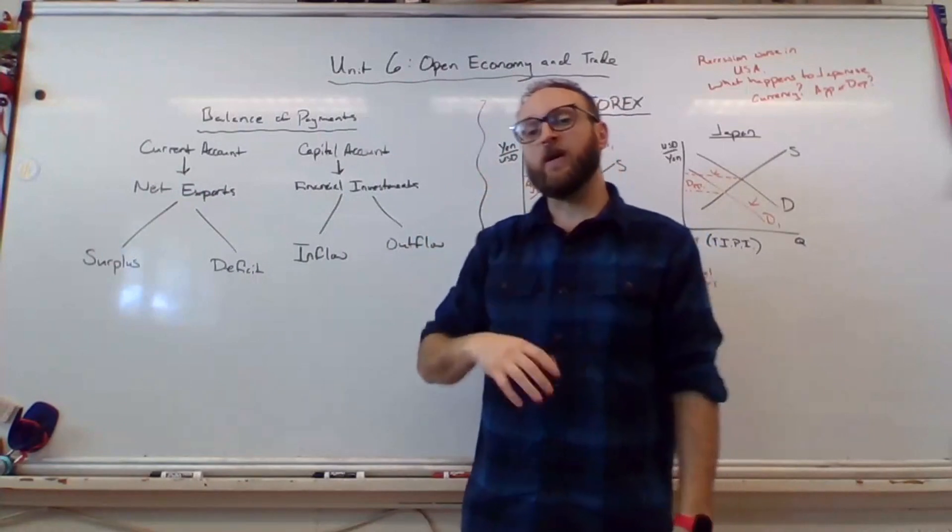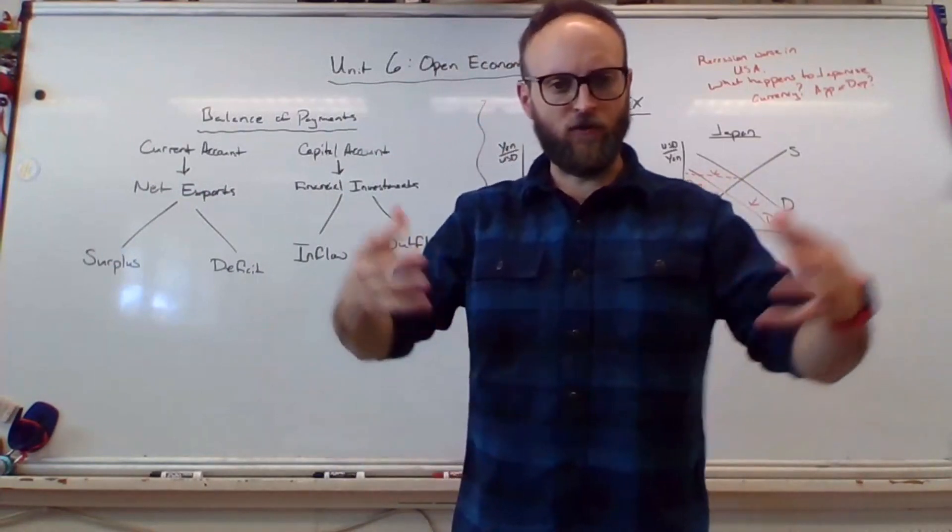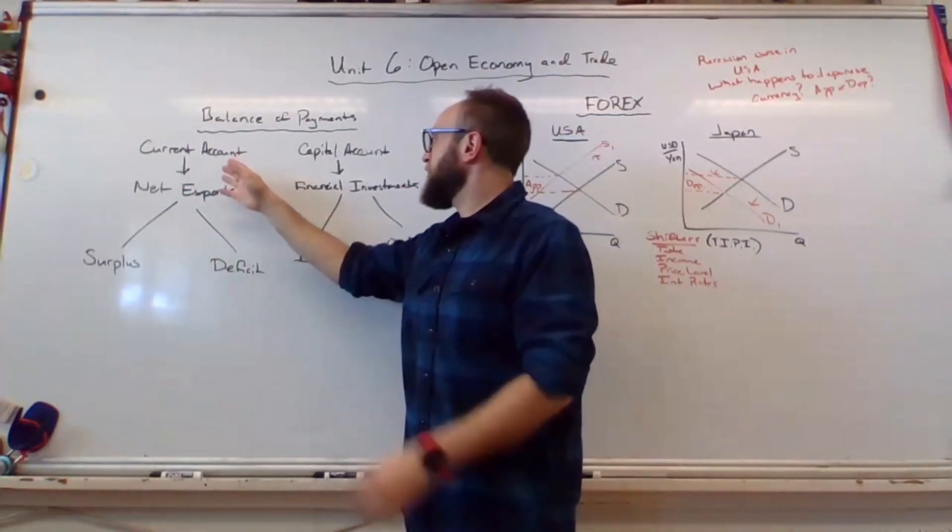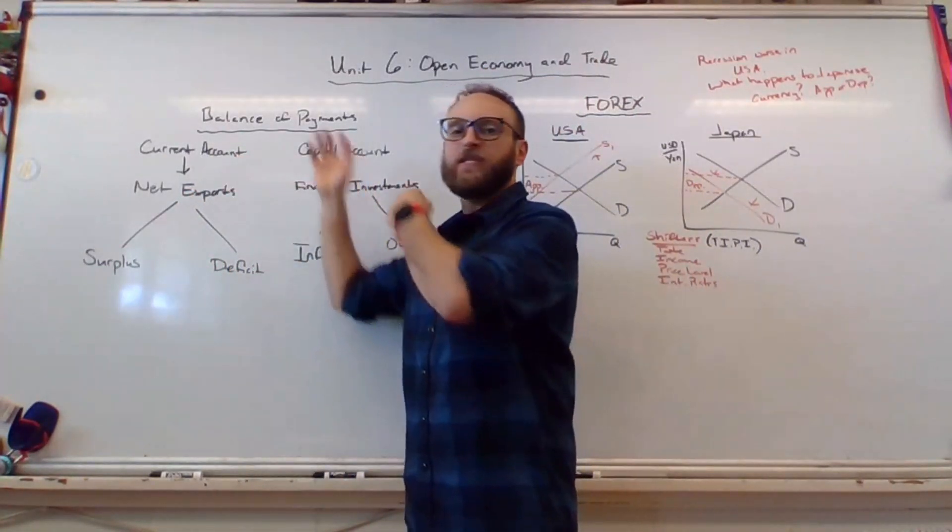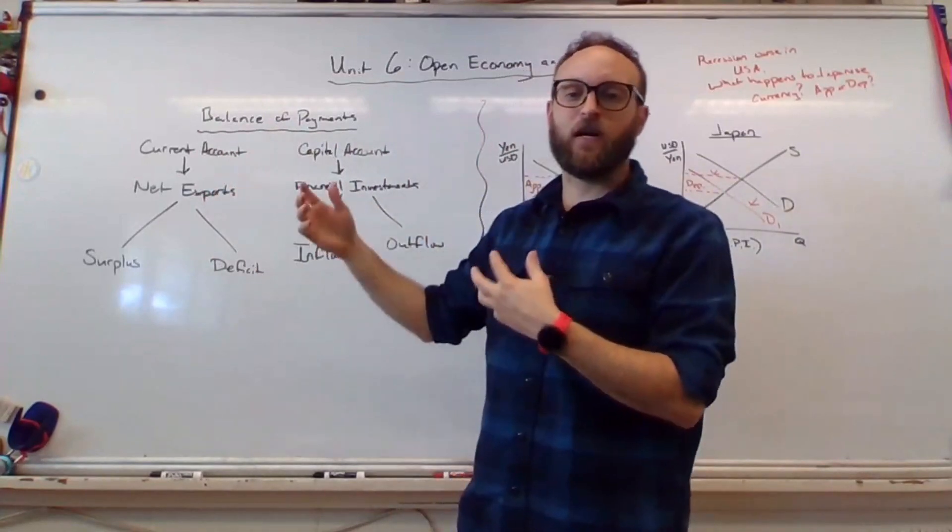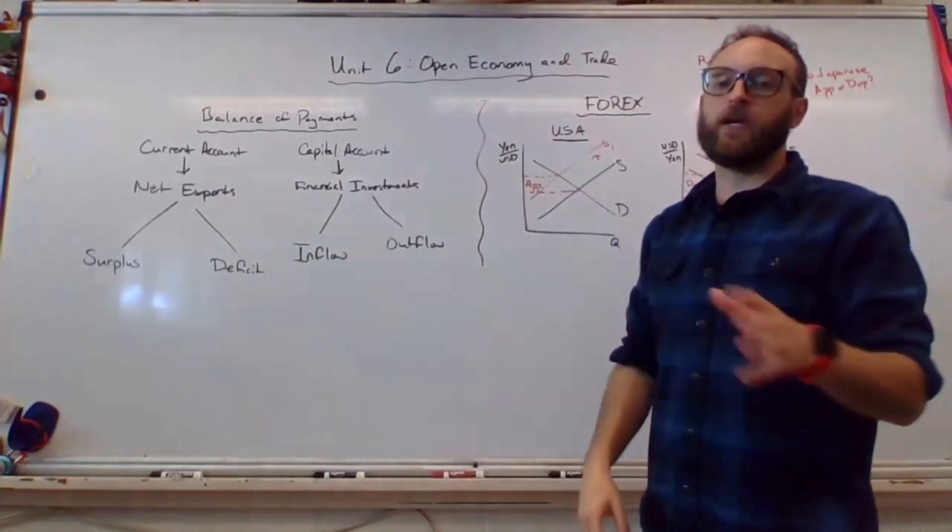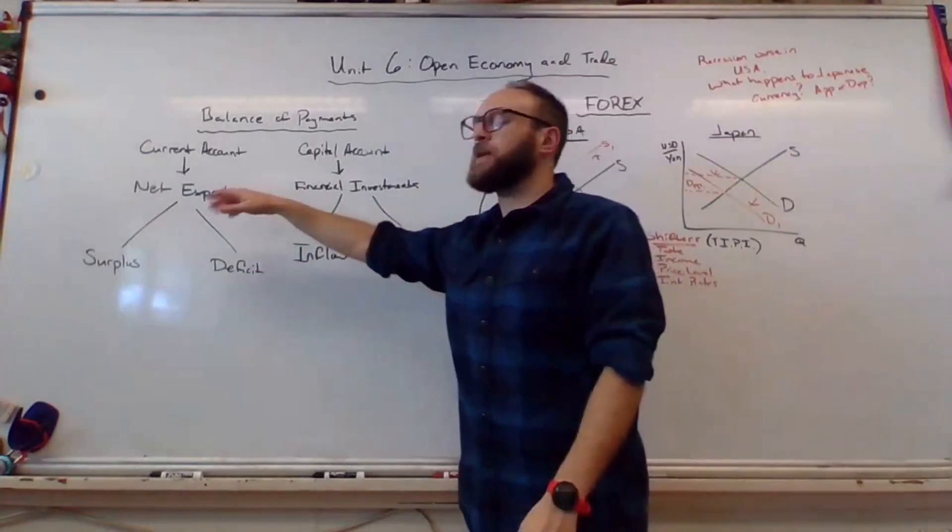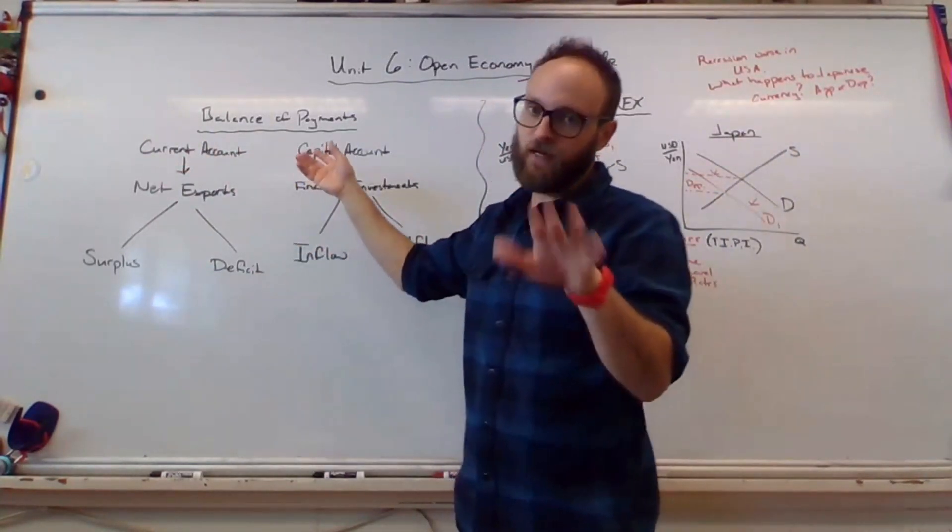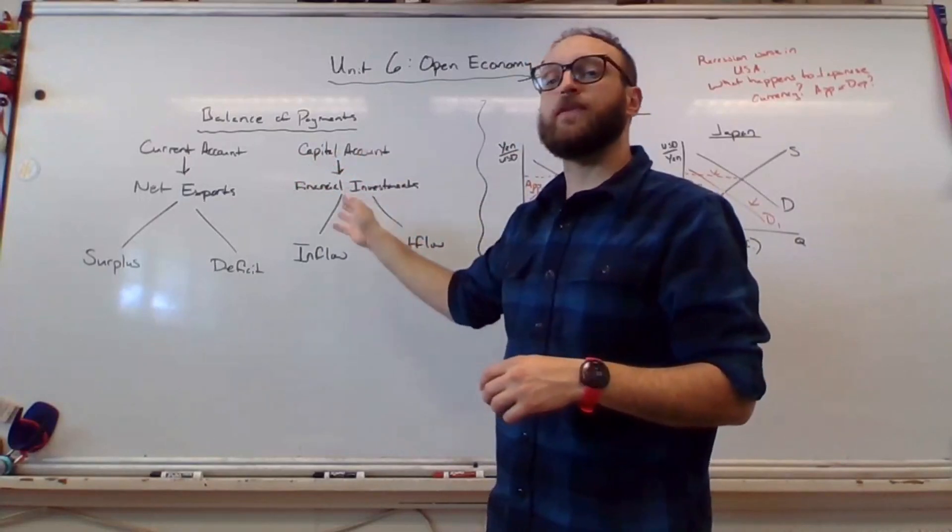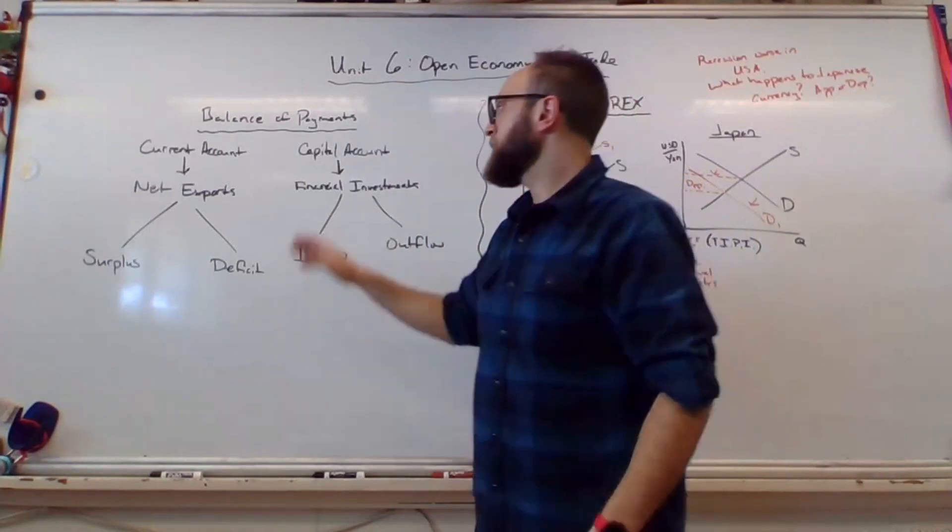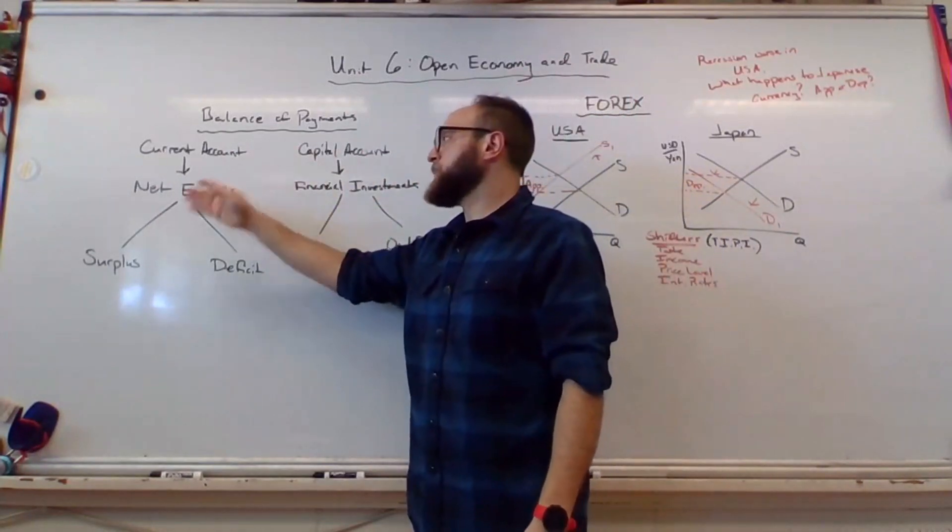Over here we have balance of payments, which is the last thing in all of macroeconomics. And it's just this idea that effectively the current account and the capital account are the sum total of all cash that's coming and going into the US economy when it's open, meaning we trade with other countries. So the current account is physical objects or net exports. And the capital account, sometimes called the financial account, refers to literally just financial investments, buying bonds with cash. This is about money. This is about objects.